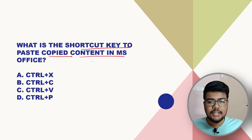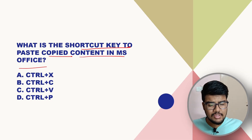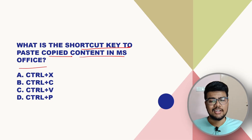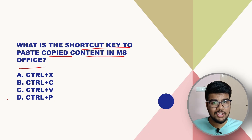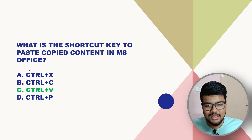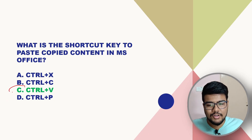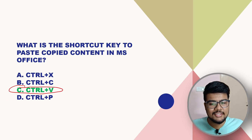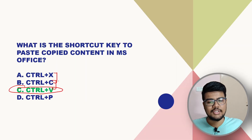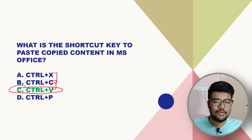What is the shortcut key to paste copied content in MS Office? The answer is Ctrl+V. Most of the software industry relies on this — along with Ctrl+C, Ctrl+X, and Ctrl+Z — as four of the most important keyboard shortcuts in IT.